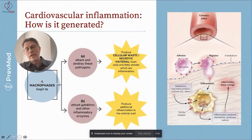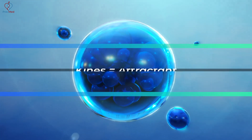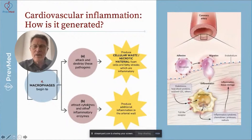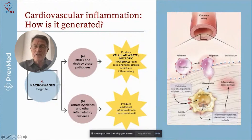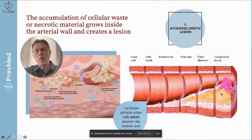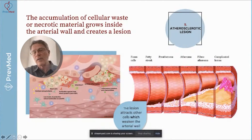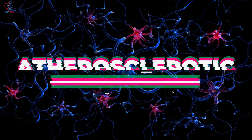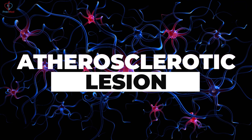The other thing I mentioned is cytokines — cyto meaning cell and kines meaning attraction — things that actually attract more immune cells. So the immune cells come in, they release enzymes and they release attractants for more immune cells. You can see that's creating a spiral of inflammation. The accumulation of this cellular waste and necrotic material grows inside the IMT — the intima media space — and creates a lesion. That's what we call an atherosclerotic lesion.